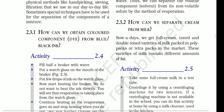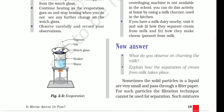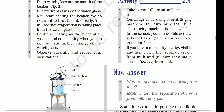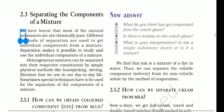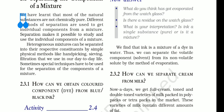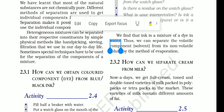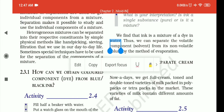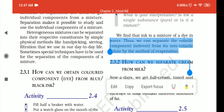How can we obtain colored components from blue-black ink? Here we have an activity based on evaporation. The process of changing a liquid into vapor is called evaporation. This is the evaporation method — let me explain how we can separate a mixture using it.